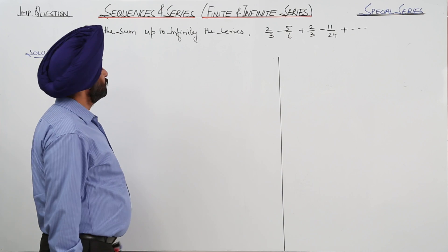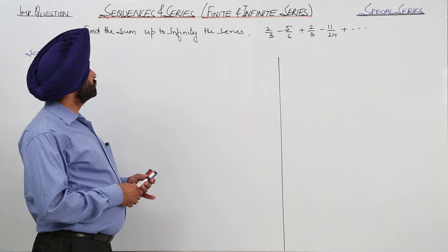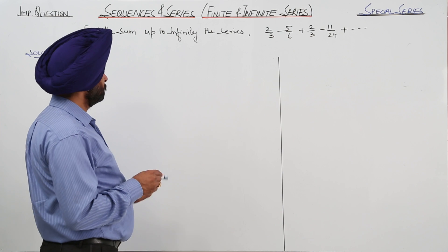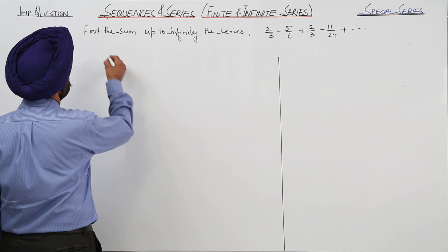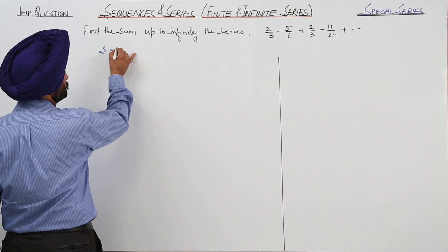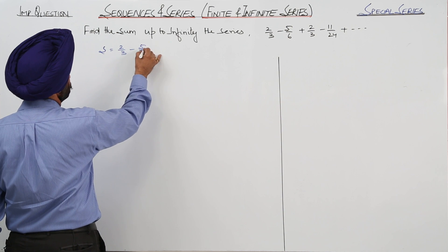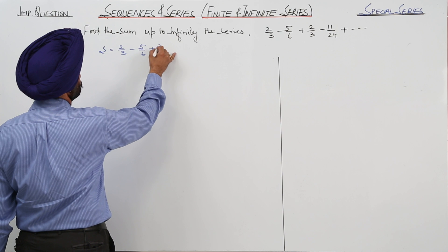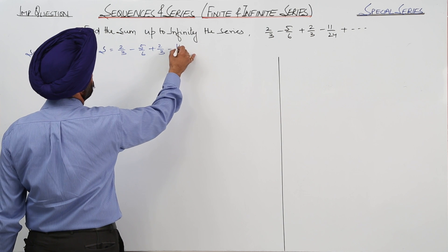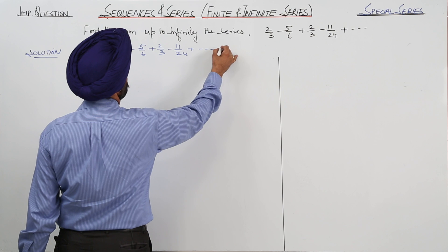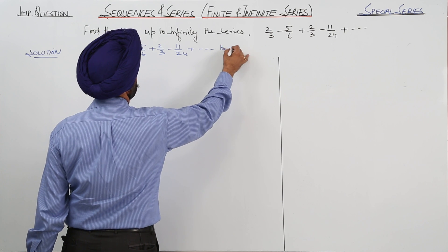Now in this question, we have to find sum up to infinity. Now what is given? S is equal to 2 by 3 minus 5 by 6 plus 2 by 3, 11 by 24 to infinity.